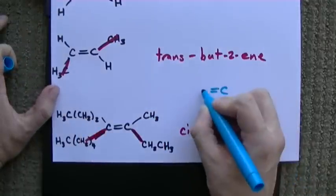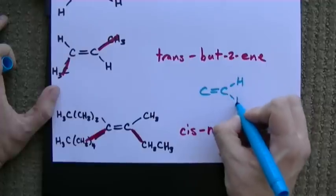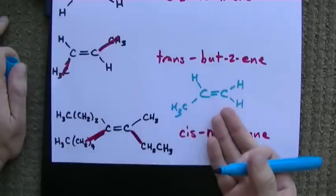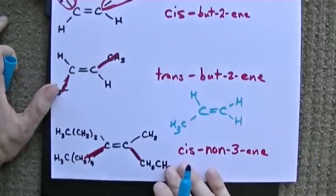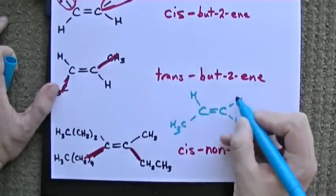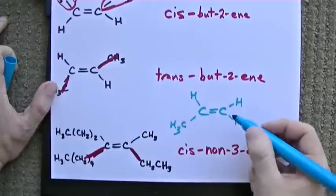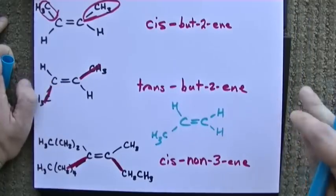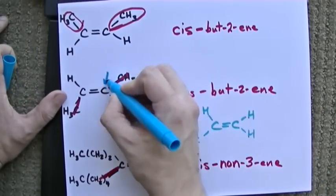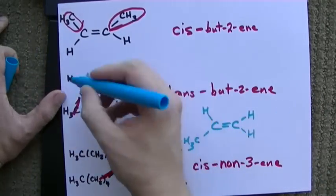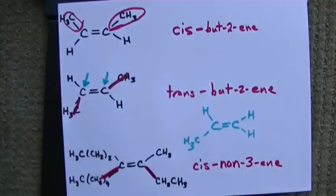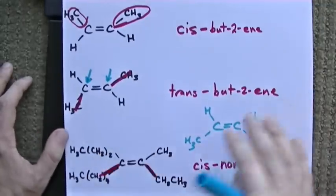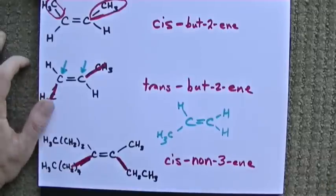One thing that I should point out is that if you had something like this, you don't need to show cis or trans for this particular molecule. Because on this side, both of the atoms are the same. So it wouldn't matter if they were flipped like it mattered here. What I'm saying is that each of the carbons that have the double bond in them needs something different attached to them. H and CH3. Pentyl and propyl. They just have to be different for cis and trans to be a big deal.